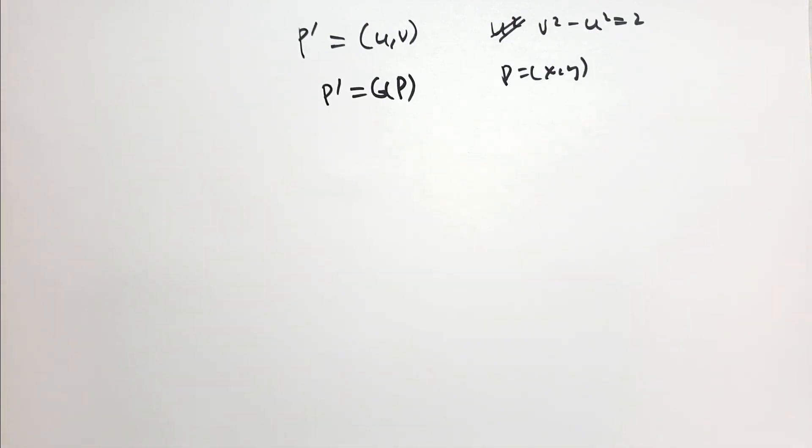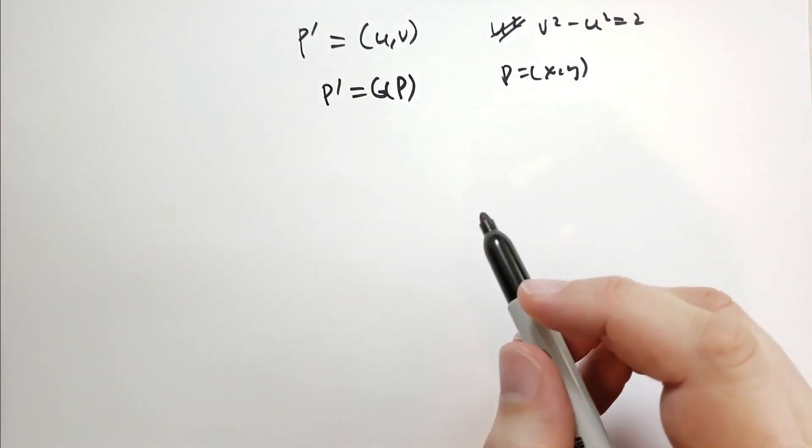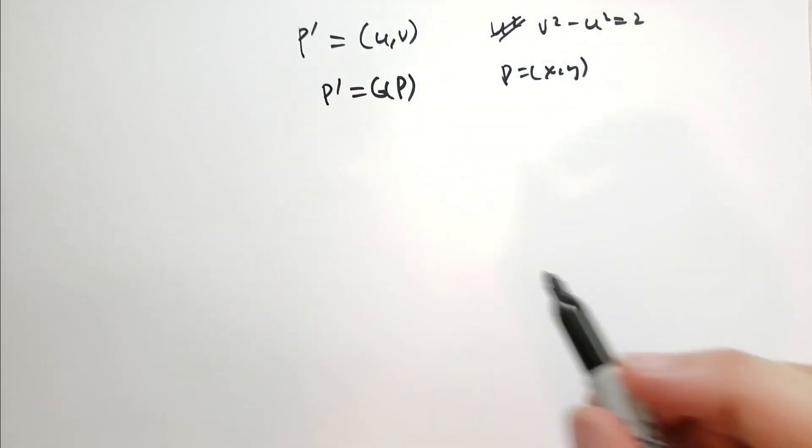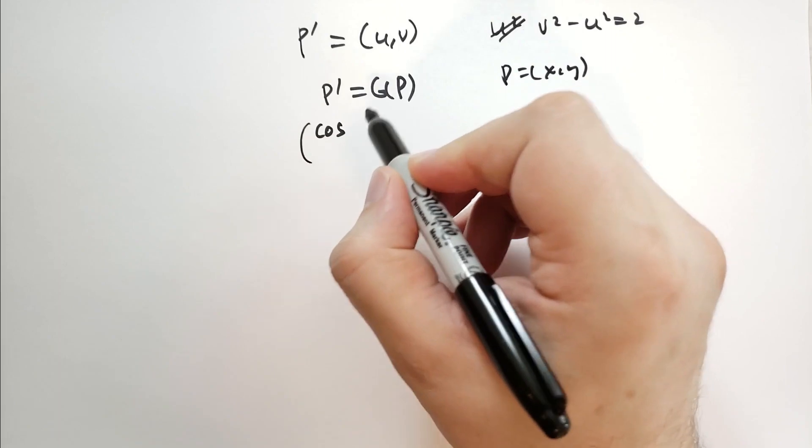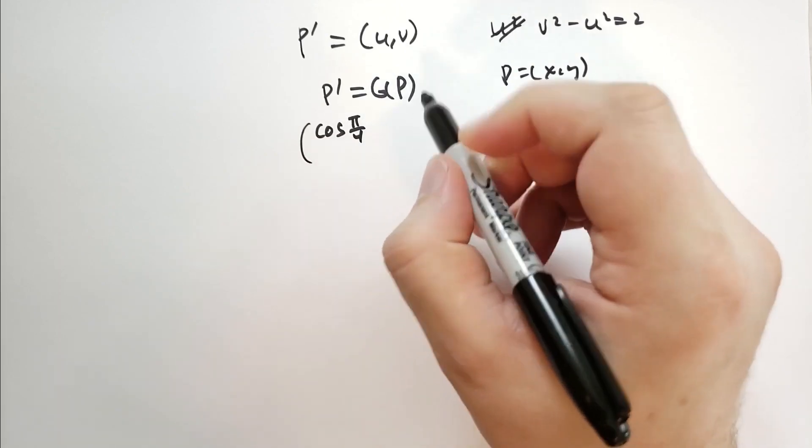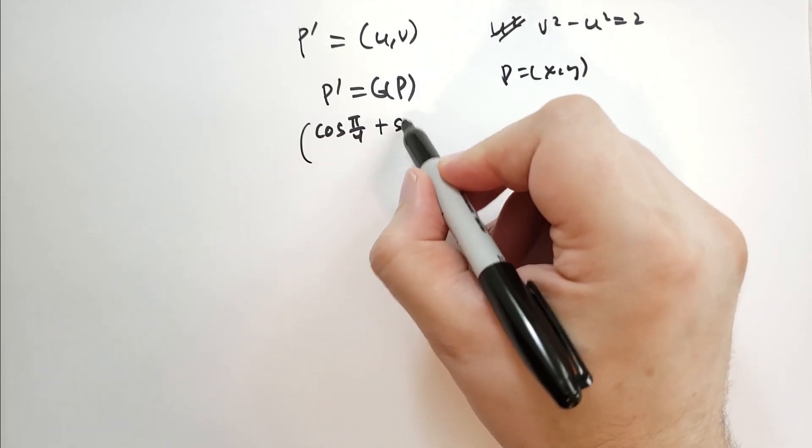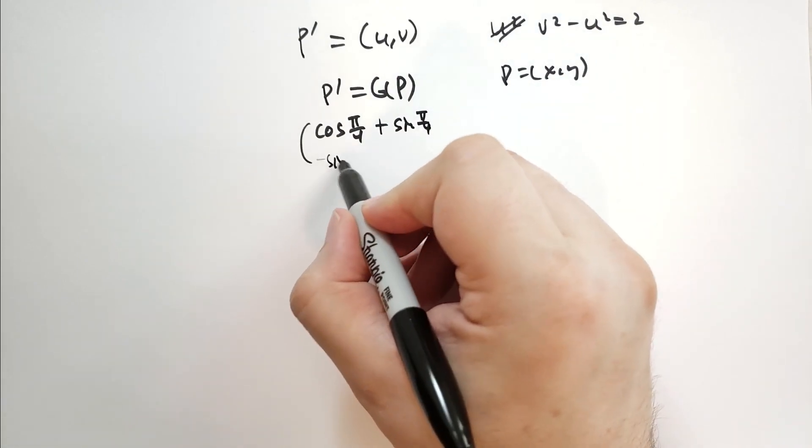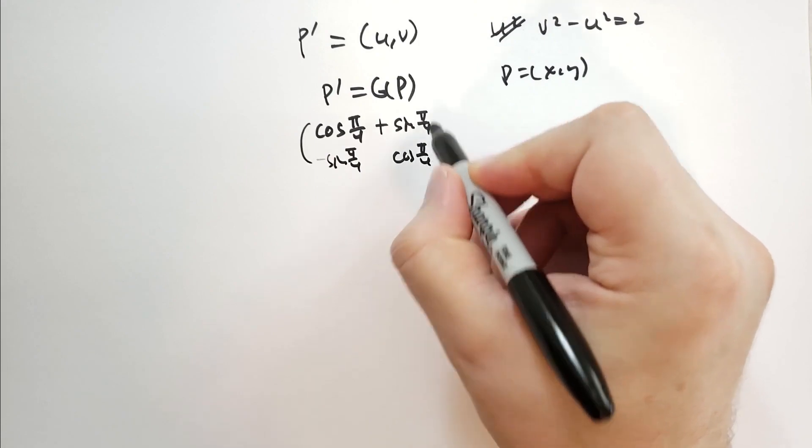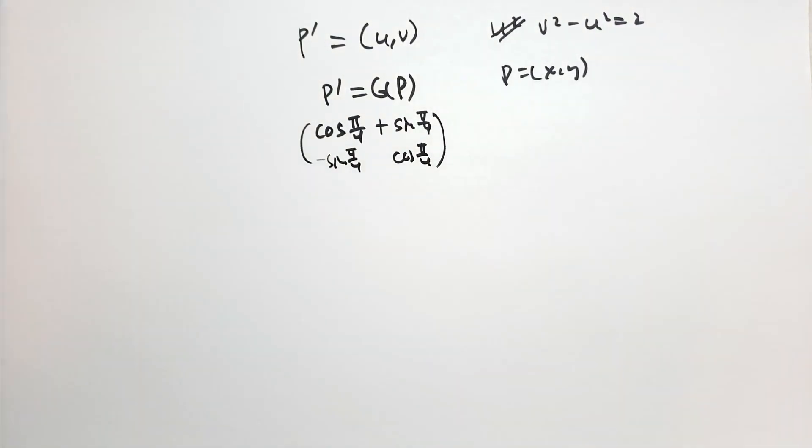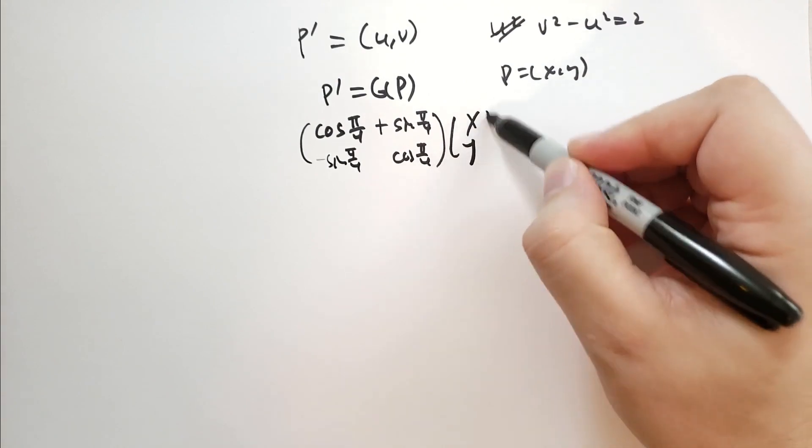So we can rotate u, v through an angle of minus pi over 4 degrees. So what would that matrix look like? So rotating by minus pi over 4 degrees. Well, cosine is going to be the same. Sine, however, flips. So we're going to get sine of pi over 4. And then we're going to get minus sine over here. And cosine is going to be the same. So we're going to rotate xy through these coordinates.